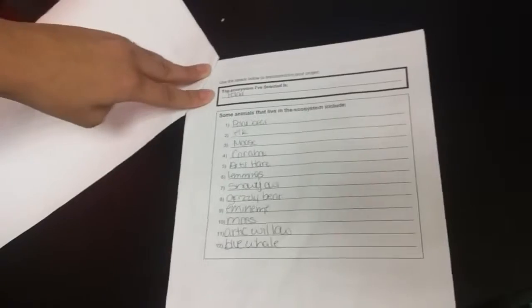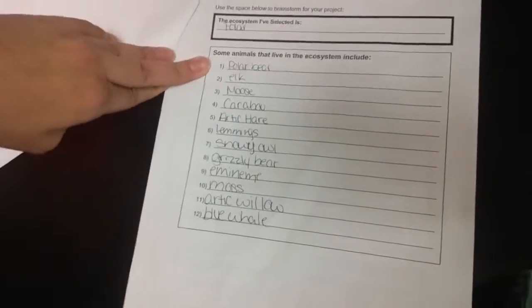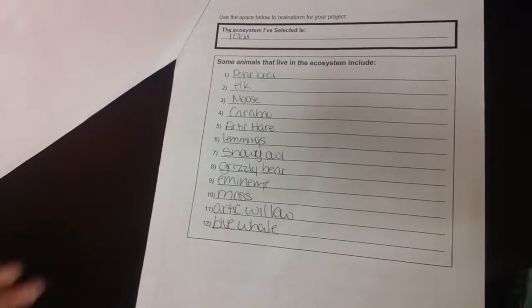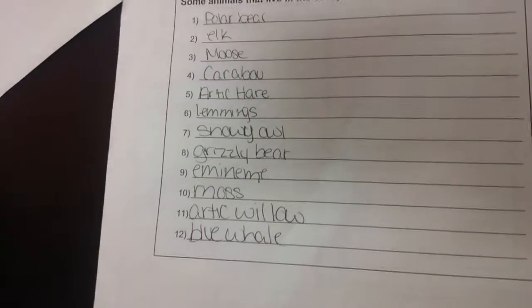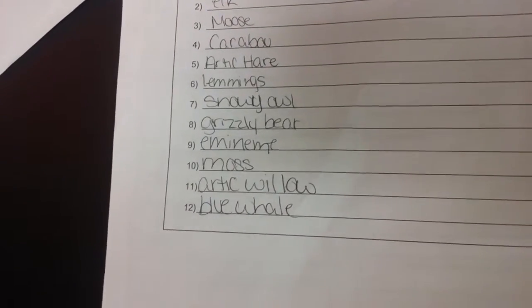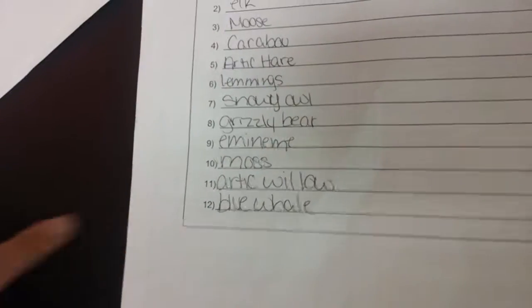And then I labeled the ecosystem I did and some of the animals that live in that ecosystem. So the polar bear and elk, moose, caribou, arctic hare, lemmings, snowy owl, grizzly bear, an ermine, moss, arctic willow, and a blue whale.